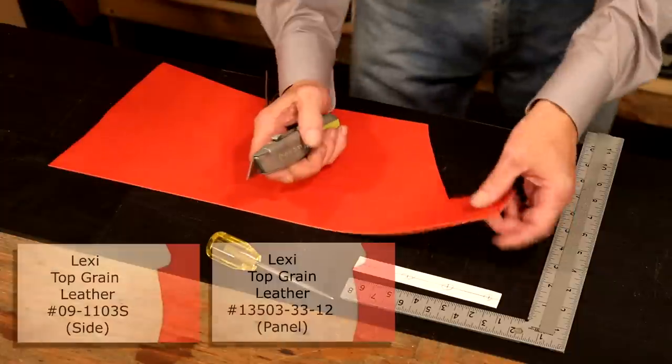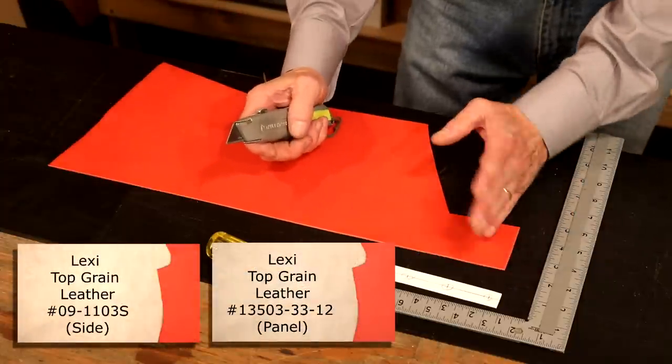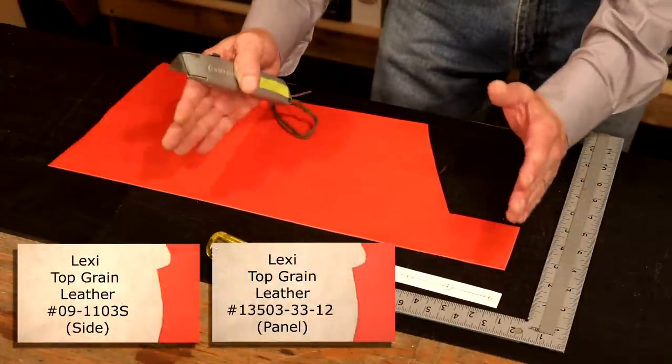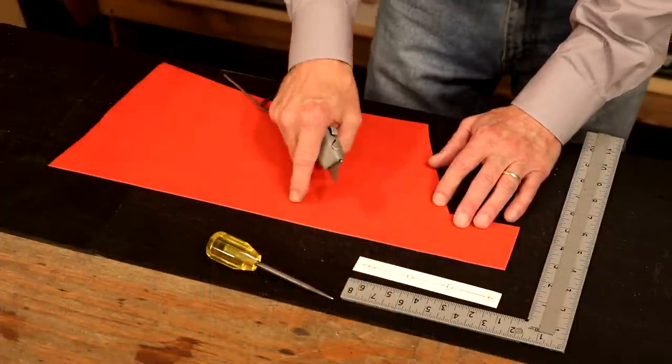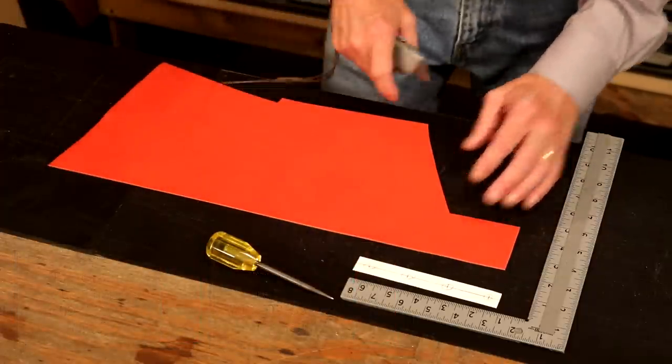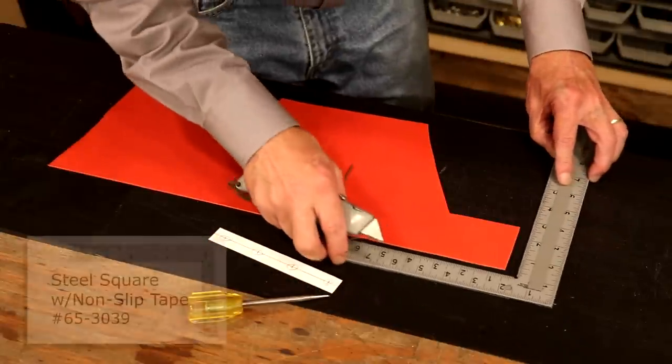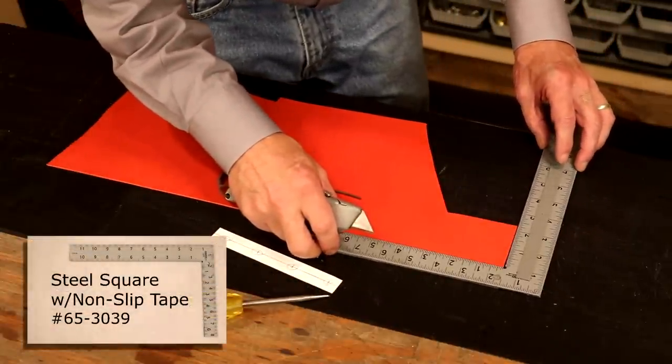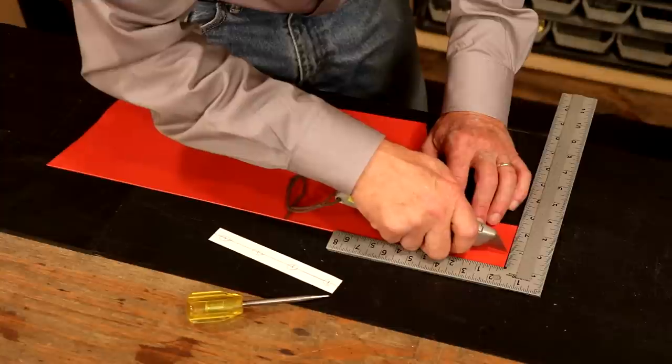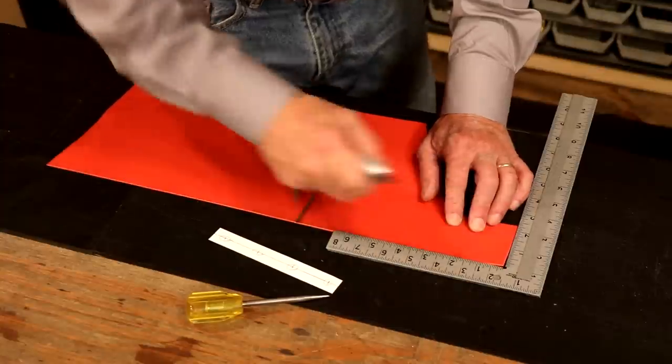So right here, this is our Lexi top grain. Great thing about Weaver, we absolutely sell full sides and hides, but we also sell a number of our leathers in smaller panels. Makes it very affordable for us crafters. So let's start right here. With my square, I'm going to come in three quarters of an inch, and I'm just going to make a mark.